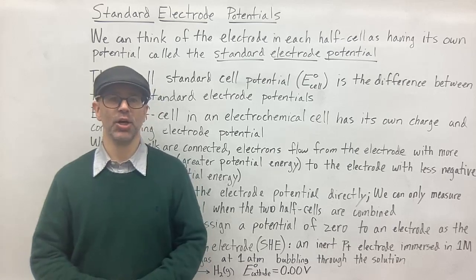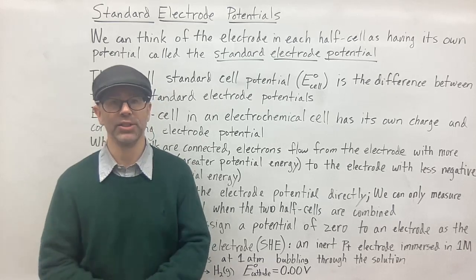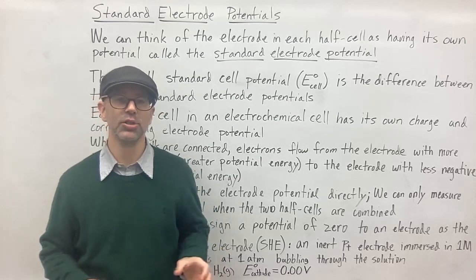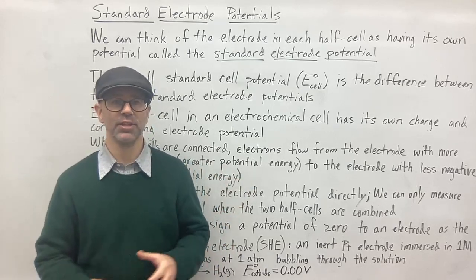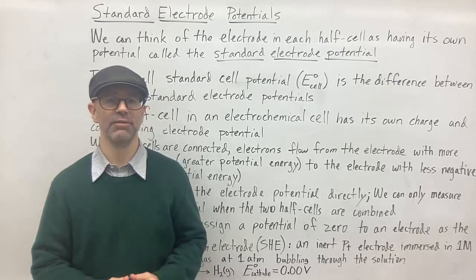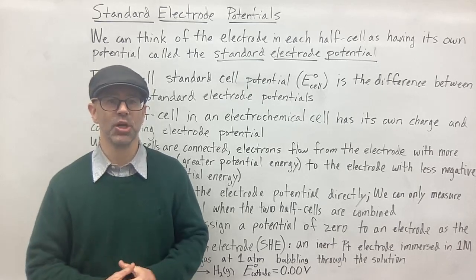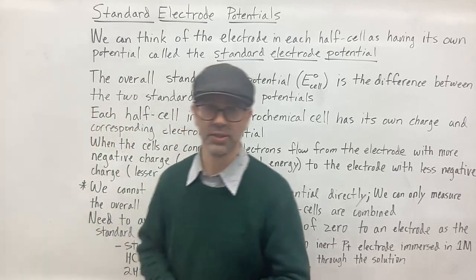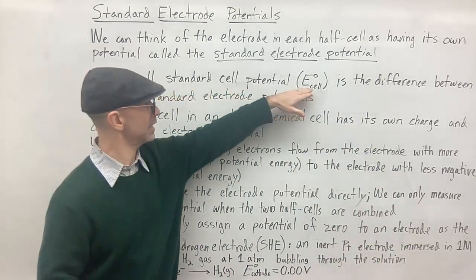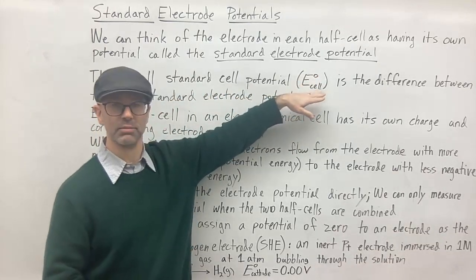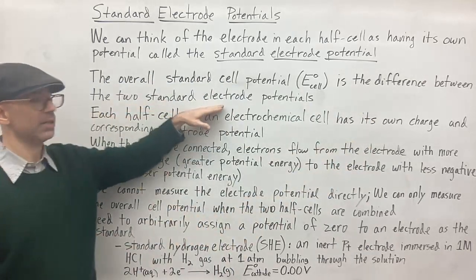In the last video, we talked about standard cell potentials and how those standard cell potentials depend on what the half reactions are. When we're thinking about the two half reactions — the two half cells that we have — we can think of the electrode in each of the half cells as having its own potential. We call that potential the standard electrode potential. The overall standard cell potential, which we call E-cell with a circle-knot, is the difference between the two standard electrode potentials.